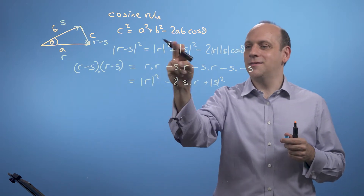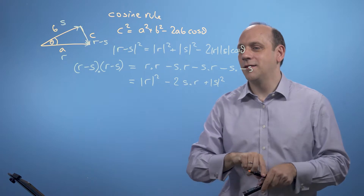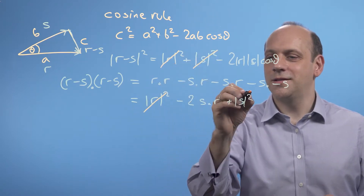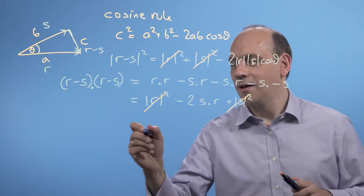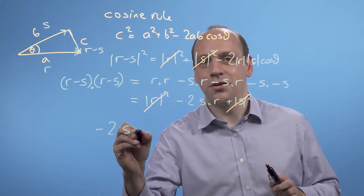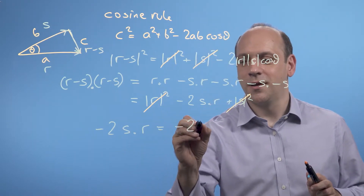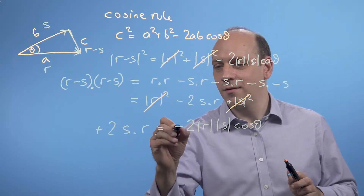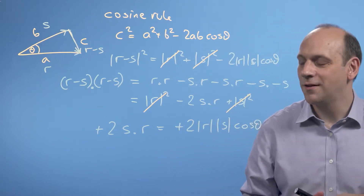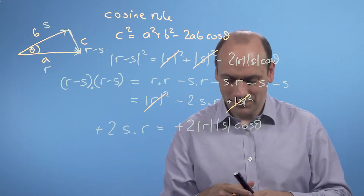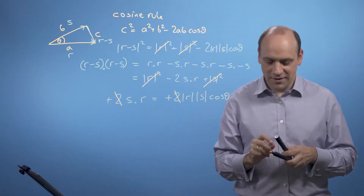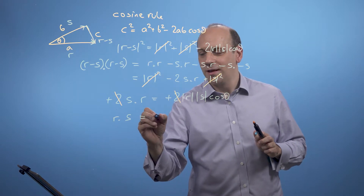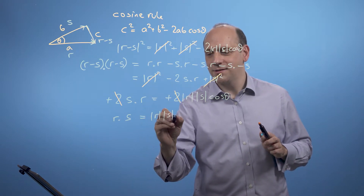Then we can compare that to the right-hand side. The r squareds are going to cancel, the s squareds are going to cancel. And so we get a result which is that minus twice s dotted with r is equal to minus twice modulus of r modulus of s cos theta. The minus signs cancel out, and the twos cancel out. So we can say that the dot product r dot s is equal to mod r mod s cos theta.